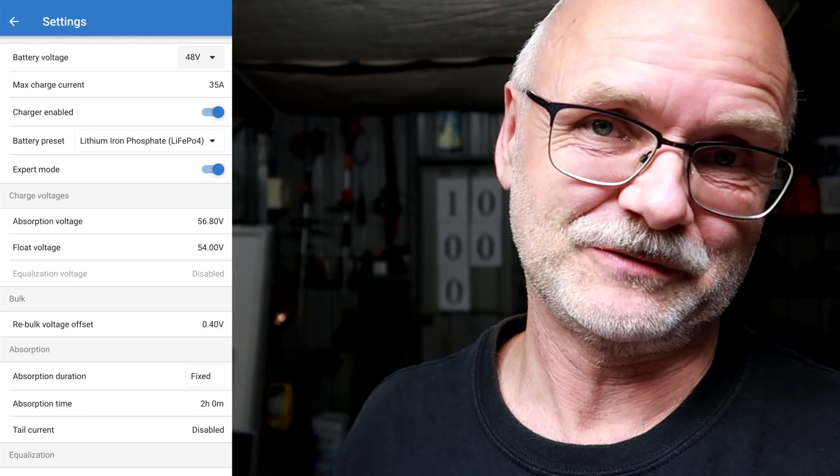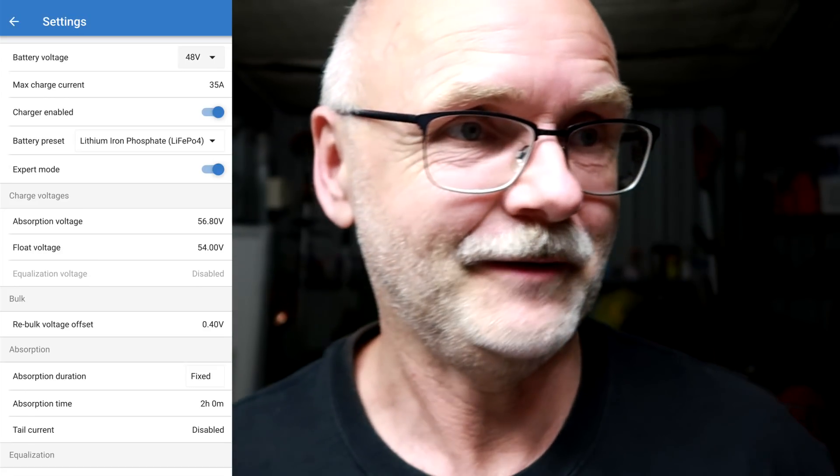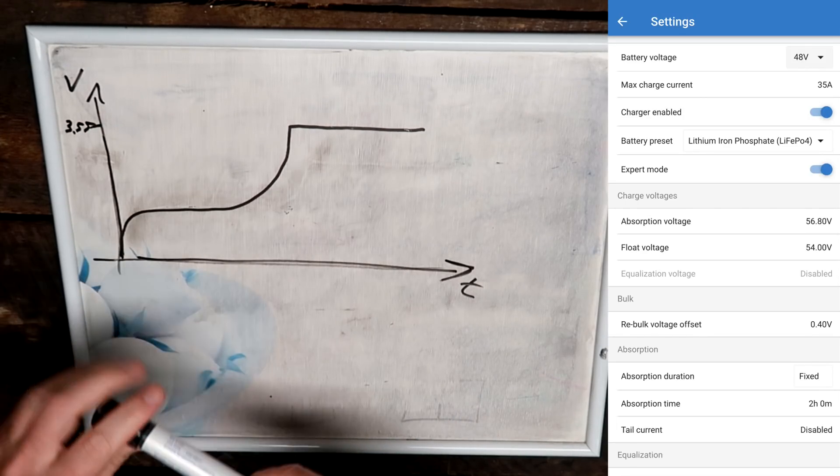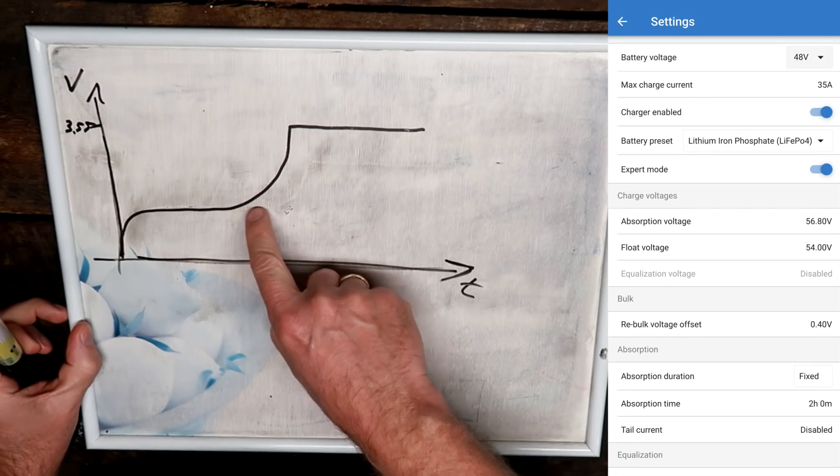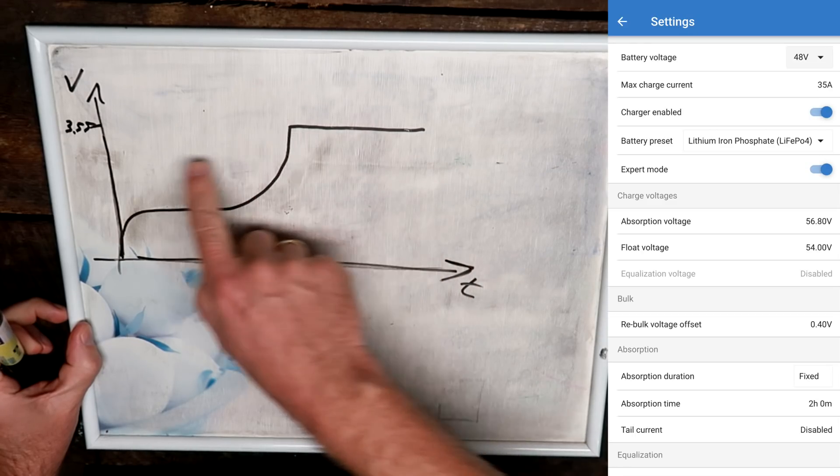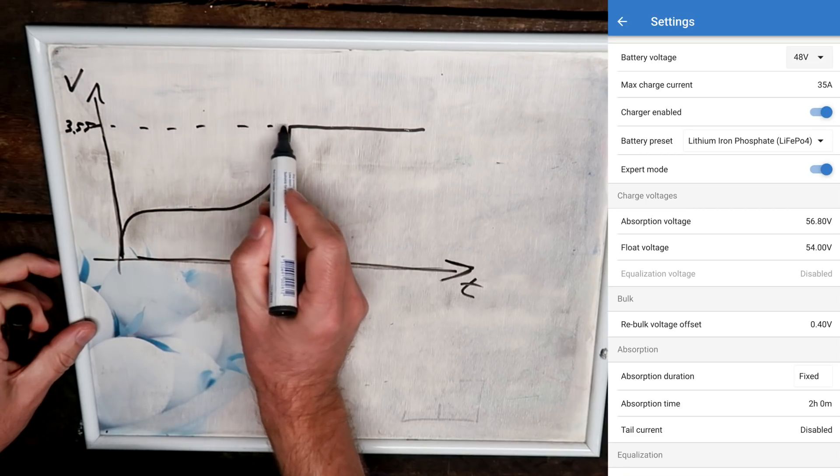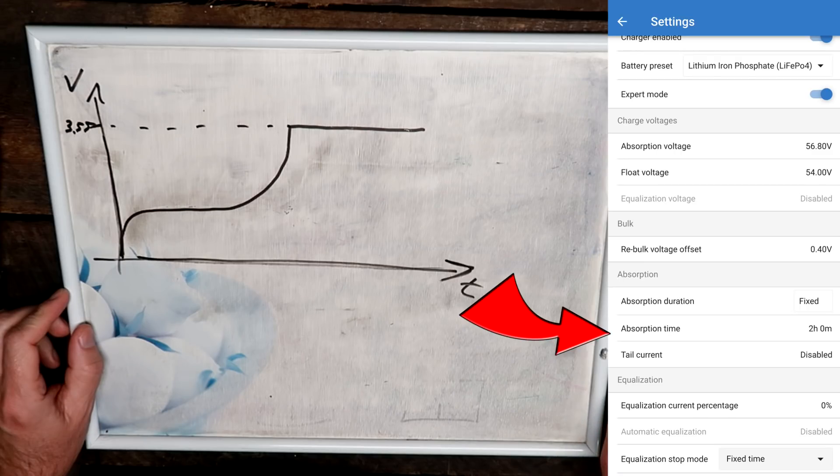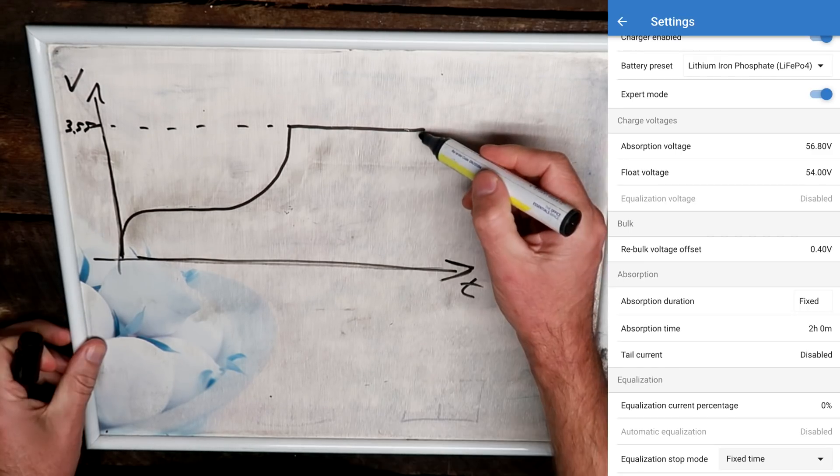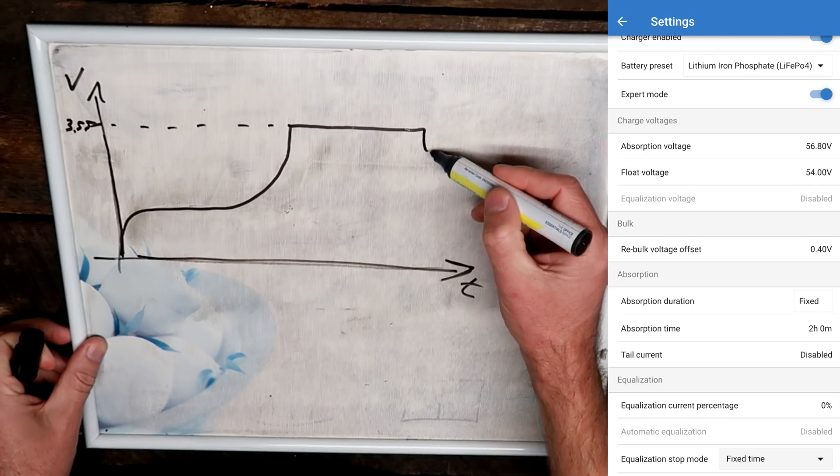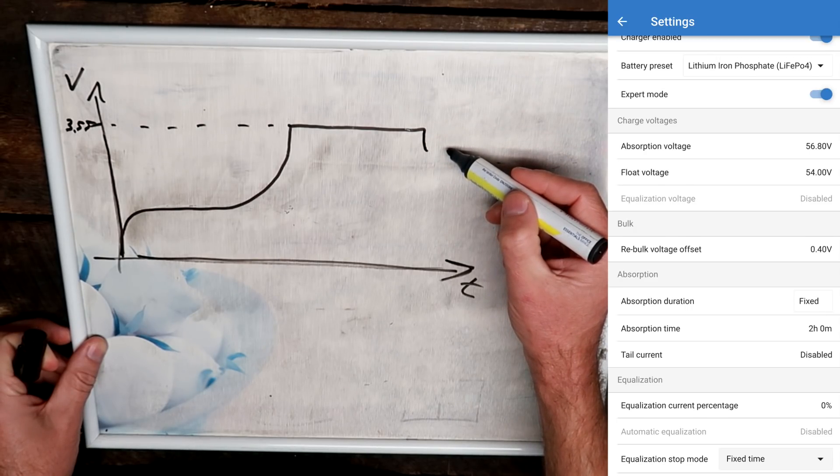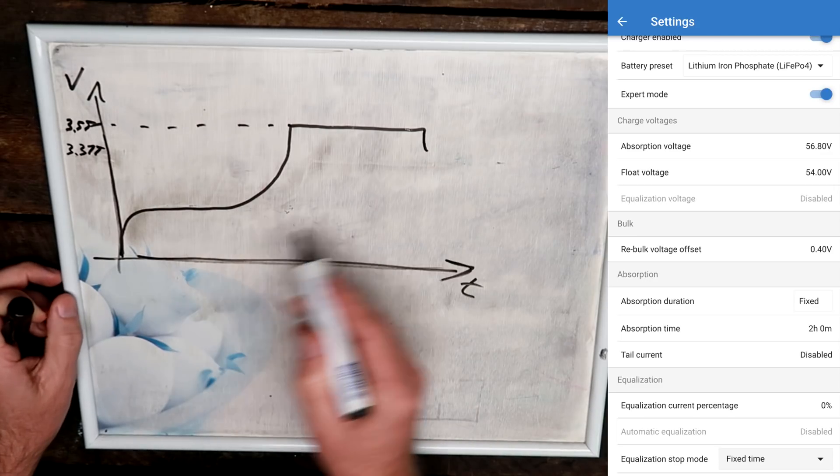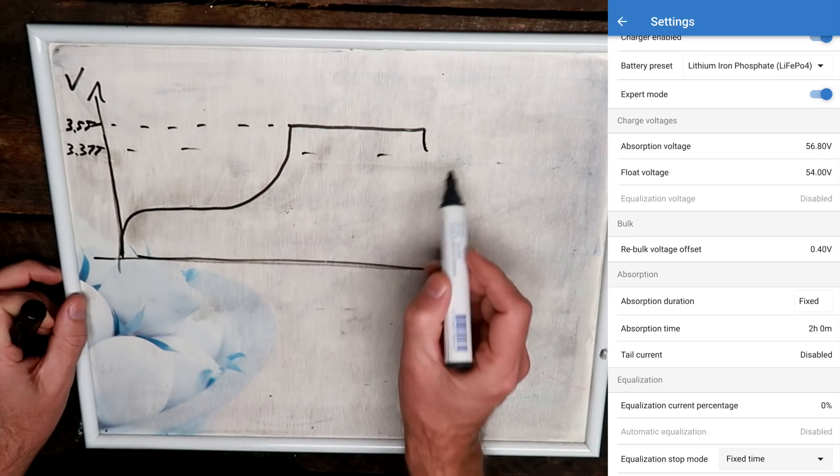Let me explain here. Okay, so what Victron is doing: they charge up your battery with a typical lithium-iron phosphate charging curve up to 3.55 volts, and then they keep the battery on 3.55 volts. As you can see down here, absorption time is two hours.